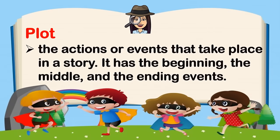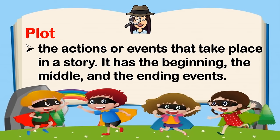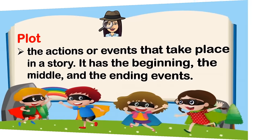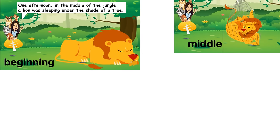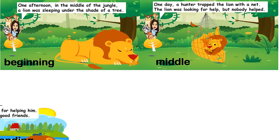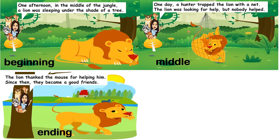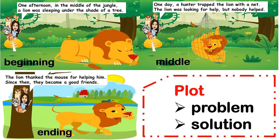Plot refers to the actions or events that take place in a story. It has the beginning, the middle, and the ending events. These are the events in the story: Beginning, Middle, and Ending. The plot has a problem and a solution.